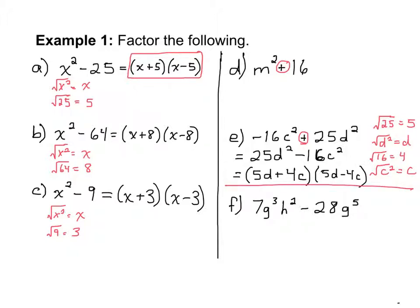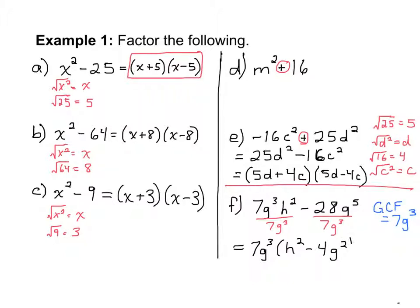Our last example, part f, is 7g cubed h squared minus 28g to the power of 5. There are no perfect squares in all of the terms here, but first we can factor out a greatest common factor of 7g cubed. You divide 7g cubed out of each term and write it out front, and then you are left with h squared minus 4g squared inside the brackets, which is a perfect difference of squares. So our answer is 7g cubed as a factor, then h plus 2g as a factor, and h minus 2g as a factor.